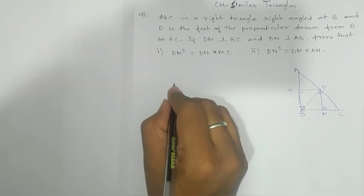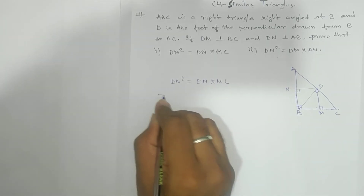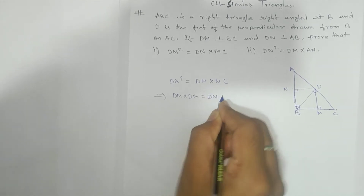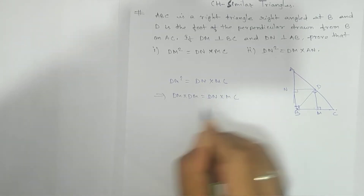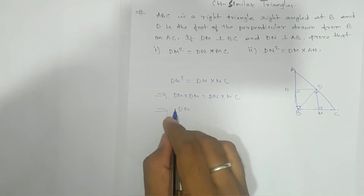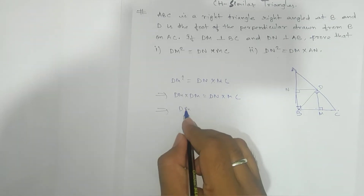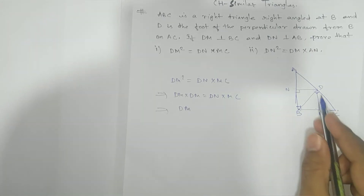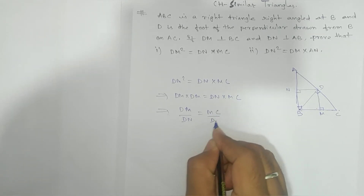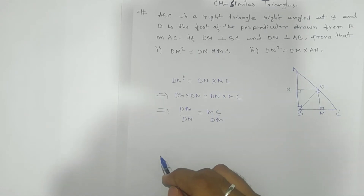Our target is to show DM² = DN × MC. This can be written as DM × DM = DN × MC, which gives us the ratio DM/DN = MC/DM. We can rearrange this as DM/MC = DN/DM, so we need to find two similar triangles that give us this ratio.